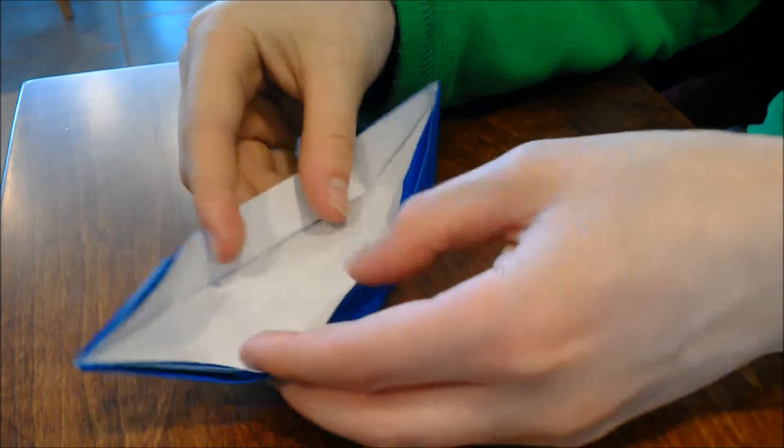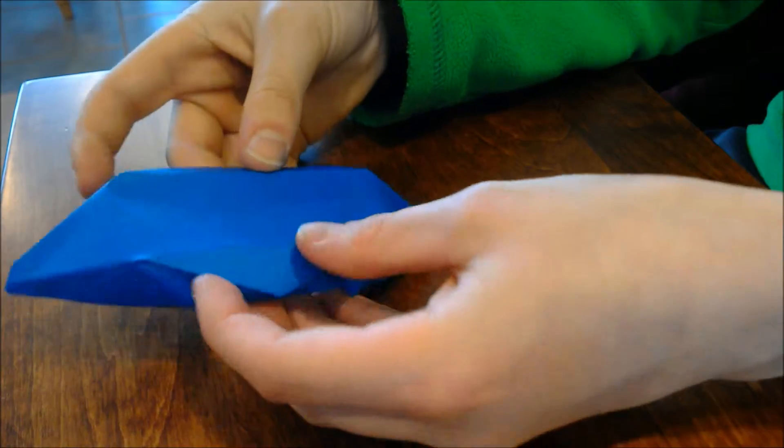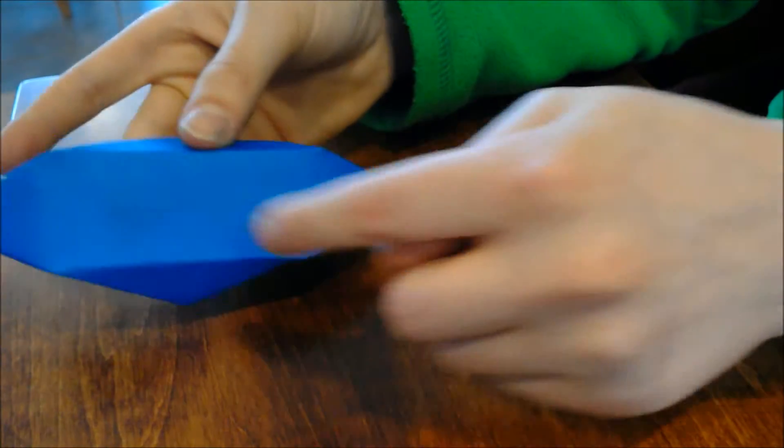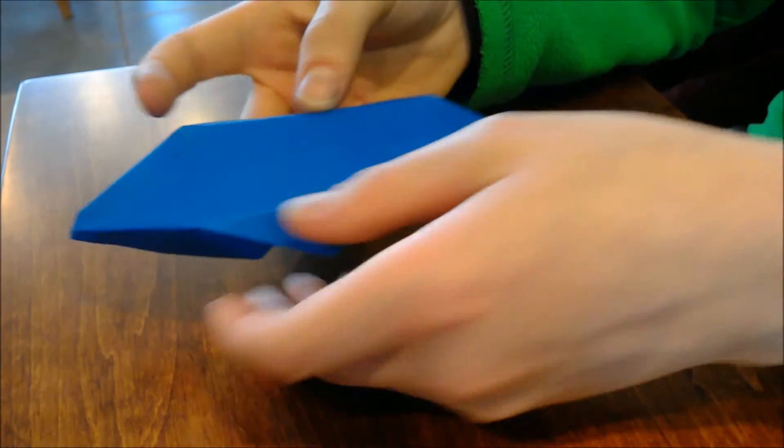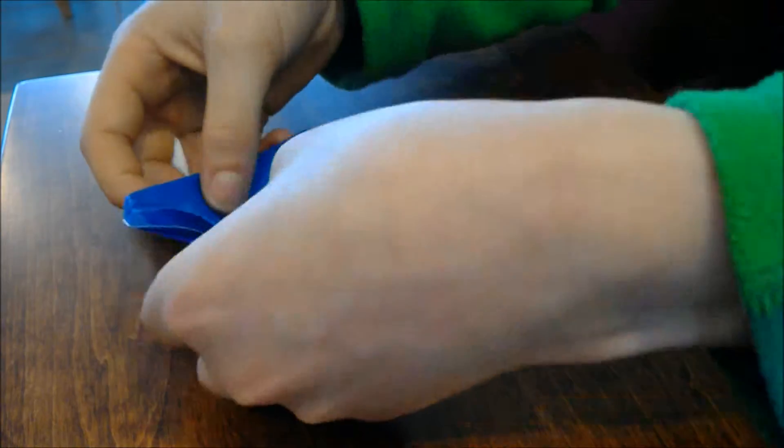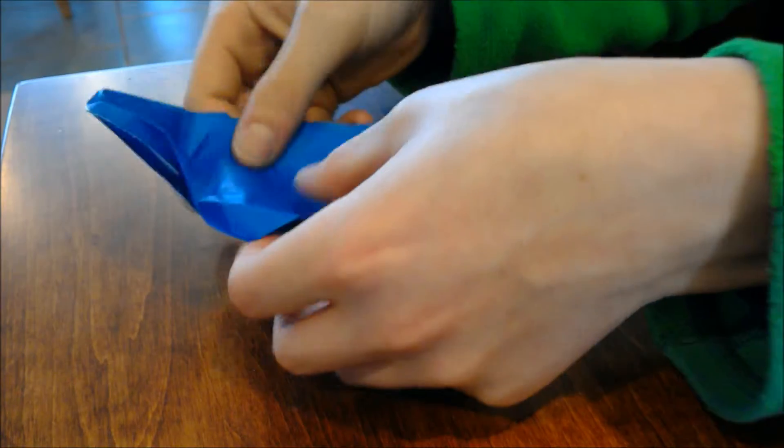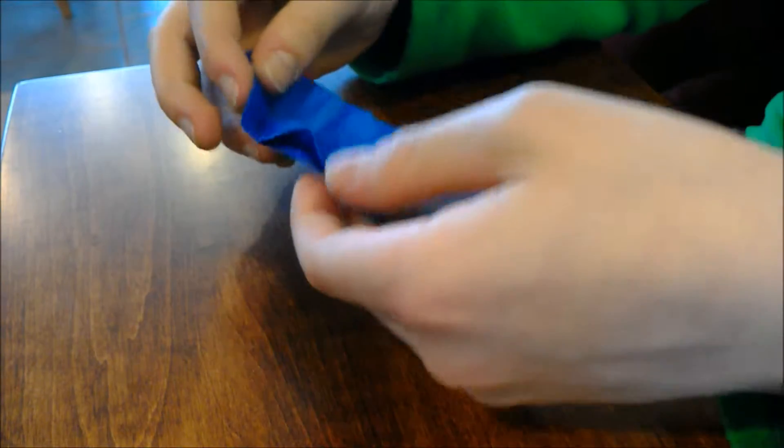So what we're going to do is flip it over and all four of these corners we're just going to push them inwards to turn the boat inside out.